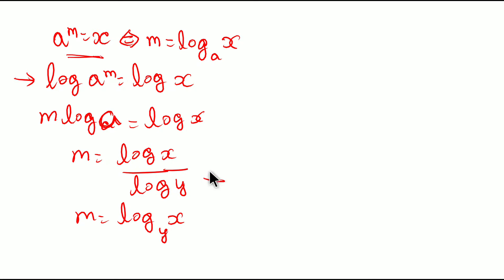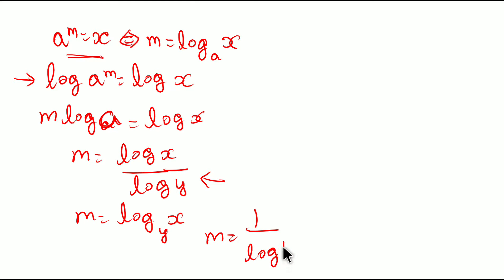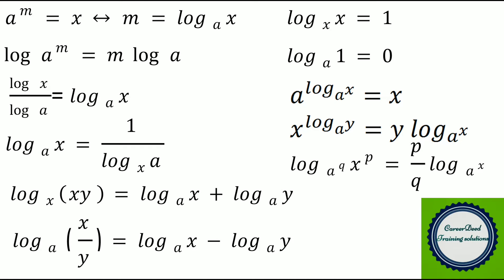Our third principle is: log X by log Y equals log of X to the base Y. And our fourth principle is: log X to the base Y can also be written as 1 by log of Y to the base X. So totally we have discussed four principles now. I will try to put all the properties in a single slide so you will get a clear understanding of how exactly the properties work.